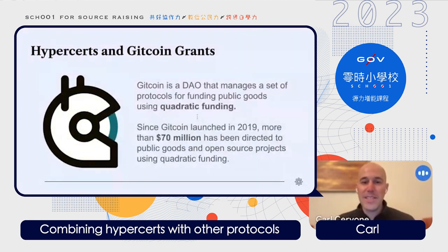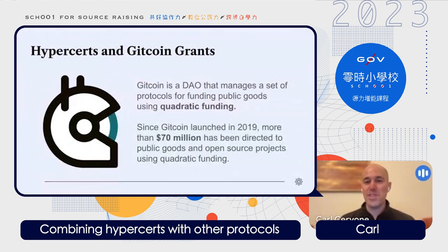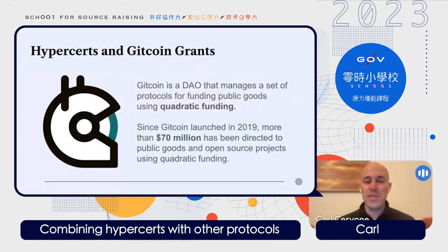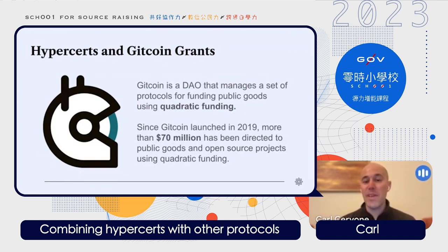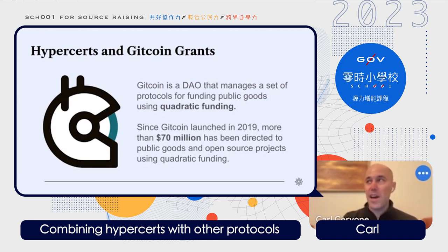Gitcoin is a DAO — Decentralized Autonomous Organization — which manages a set of Ethereum protocols for funding public goods using something called Quadratic Funding. Since 2019, they've given out more than $70 million to public goods using Quadratic Funding.